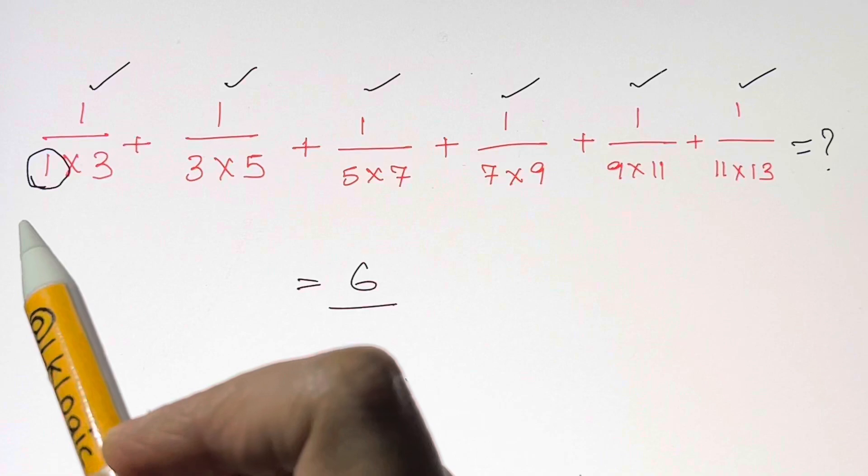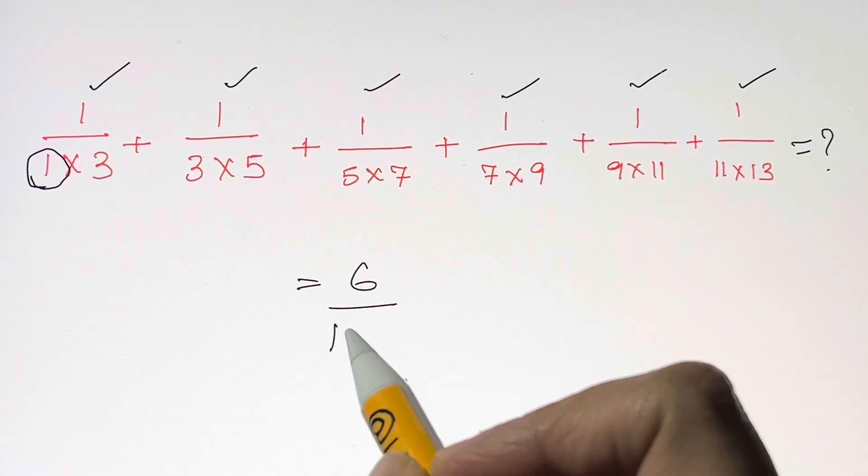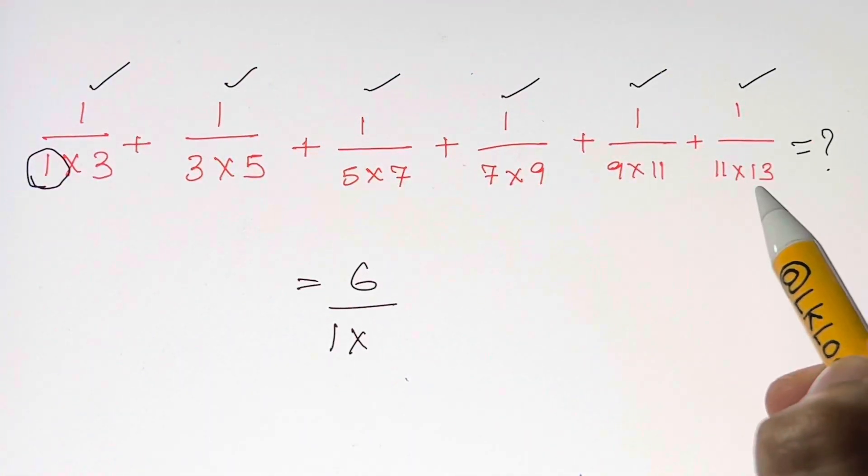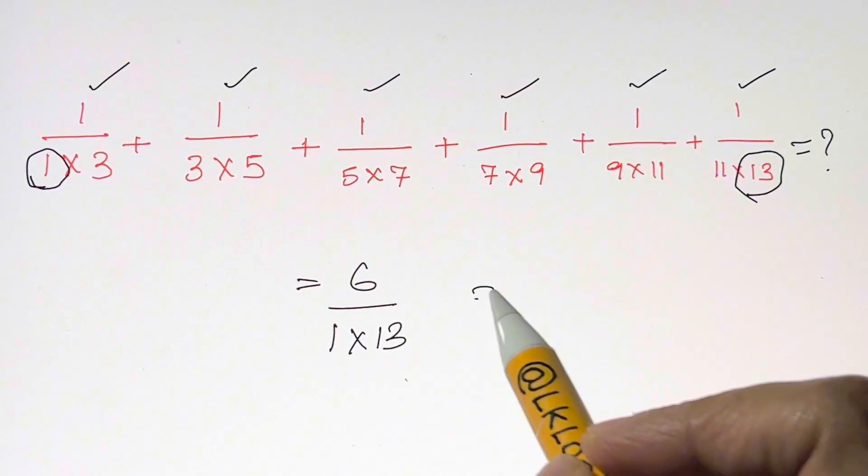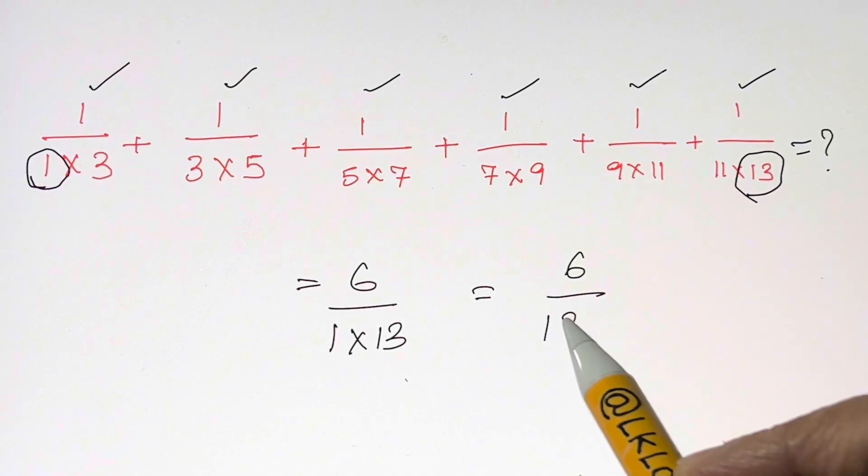What's the first digit where it's starting? That's one. Write down one times what's the last digit where it's ending? 13. So write down 13 here, and that's your answer: 6/13.